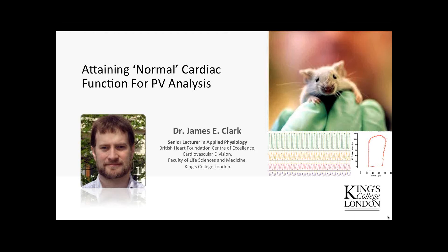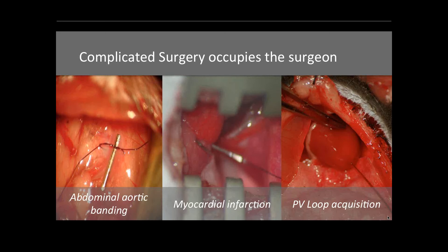Let's set the scene. We're not talking about implantation of osmotic pumps, basic surgery, or simple skin incisions and short-term recovery procedures. We're focused on relatively complicated surgery that will impact cardiovascular hemodynamics or respiratory function of the surgical model. I've shown three examples of our work at King's: abdominal aortic banding or thoracic aortic banding, the classic myocardial infarction by suturing the left anterior descending coronary artery, and PV loop acquisition.